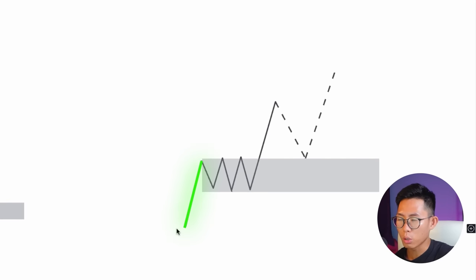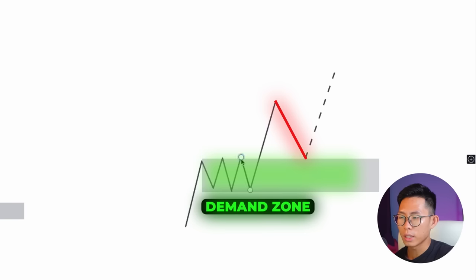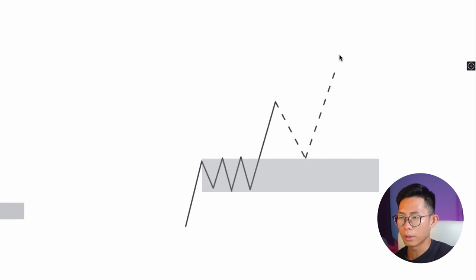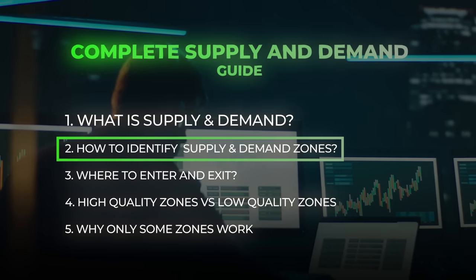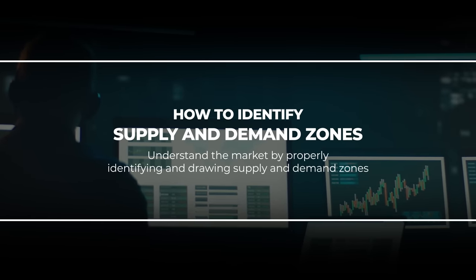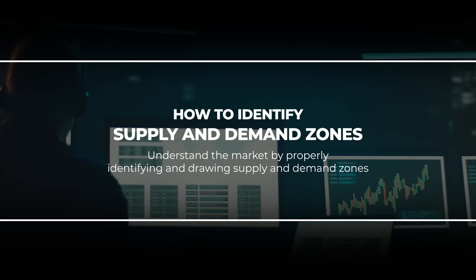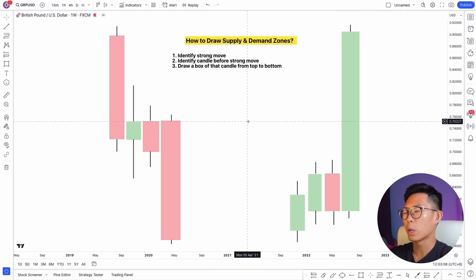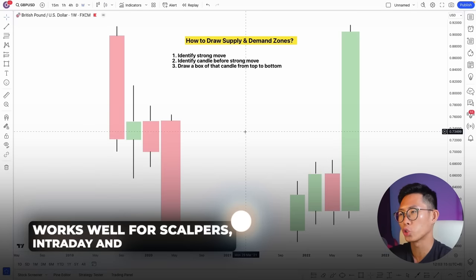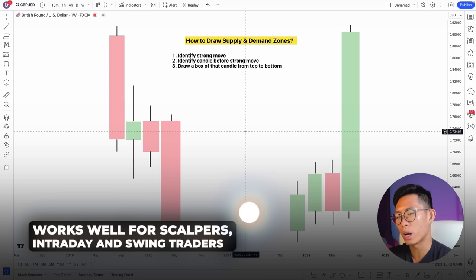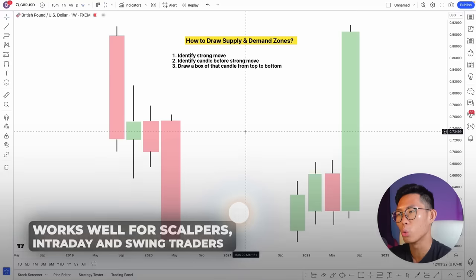Another example: price goes up, consolidates — immediately draw your demand zone, wait for price to come back down to retest it, and then enter the trade. You can use this on any timeframe — whether the 5-minute, 1-hour, or even the weekly timeframe. This supply and demand strategy works really well whether you are a scalper, intraday trader, or swing trader.